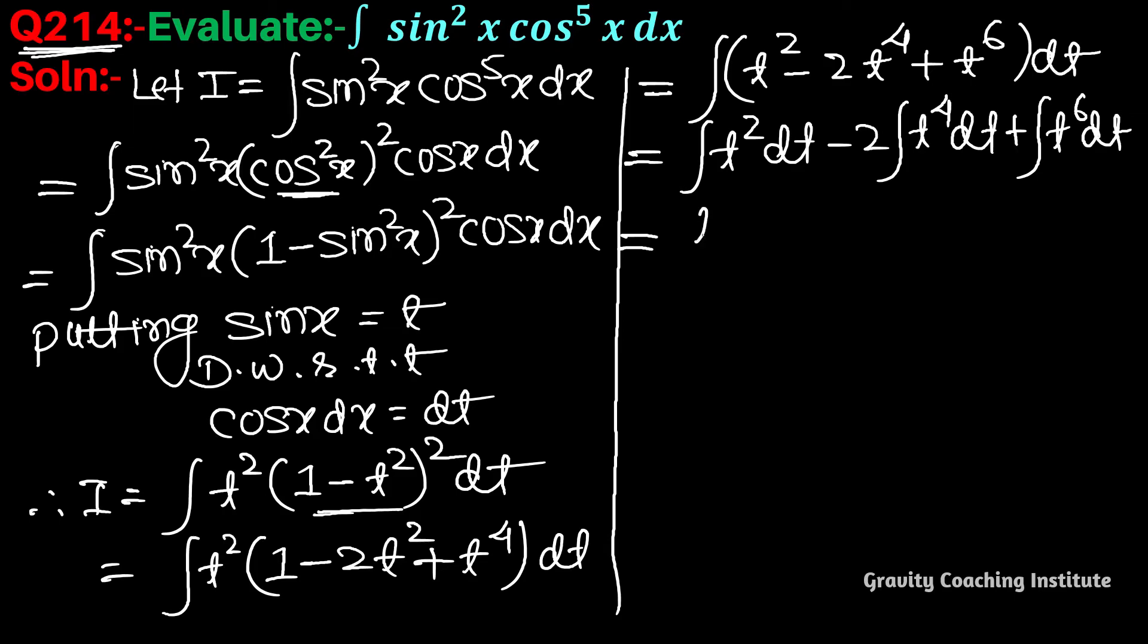Integration of t² gives t³/3, t⁴ gives t⁵/5, plus t⁶ gives t⁷/7. Now we put the value of t back.